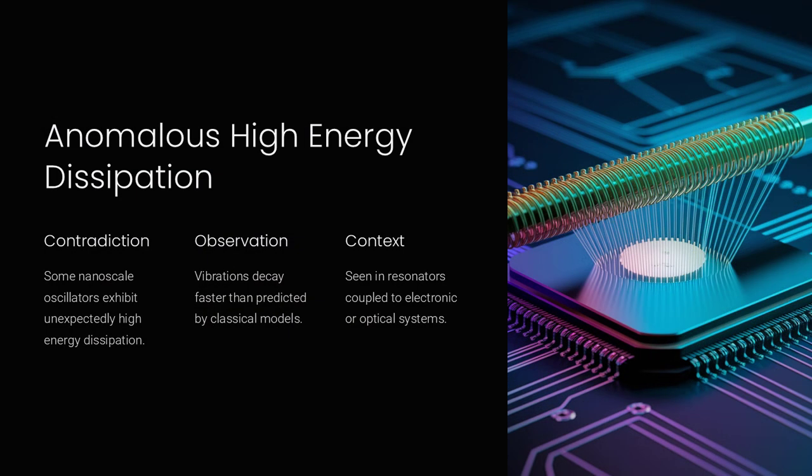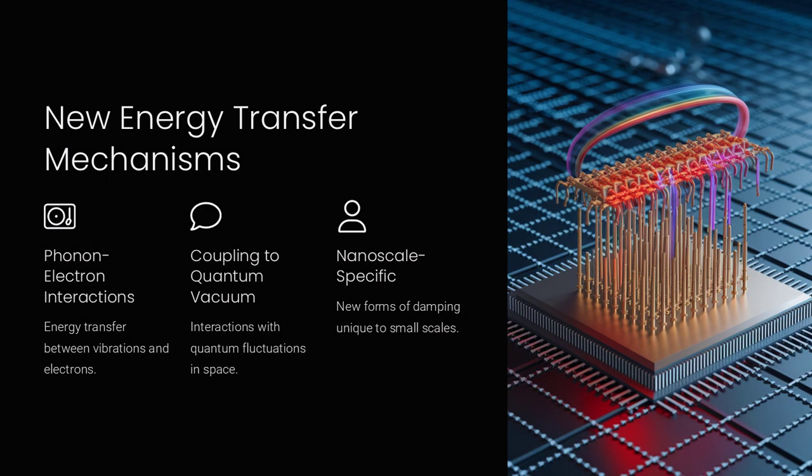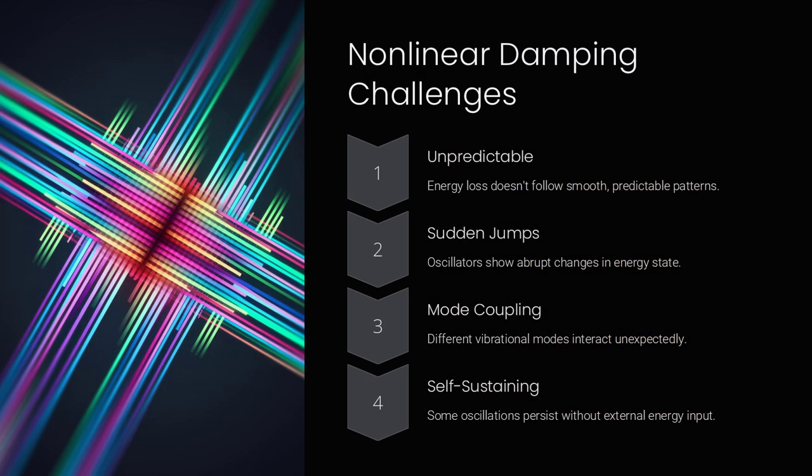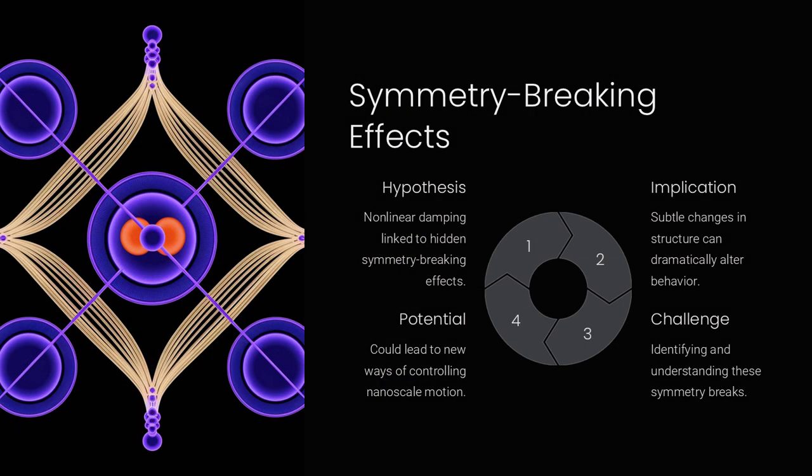But nanoscale oscillators, such as graphene resonators, carbon nanotube oscillators, and silicon nanobeams, often display extremely high quality factors, Q factors, meaning they vibrate for much longer than expected before damping effects take over.